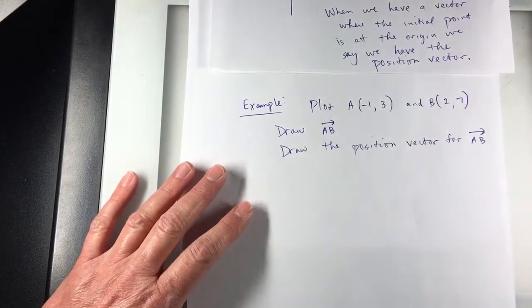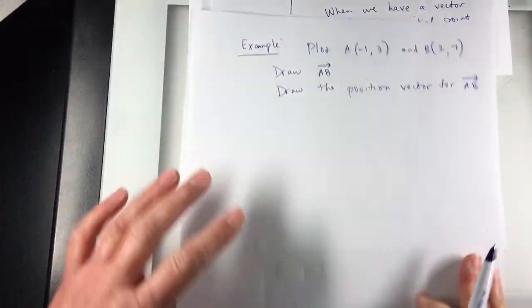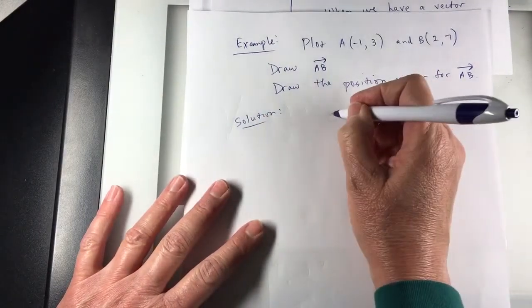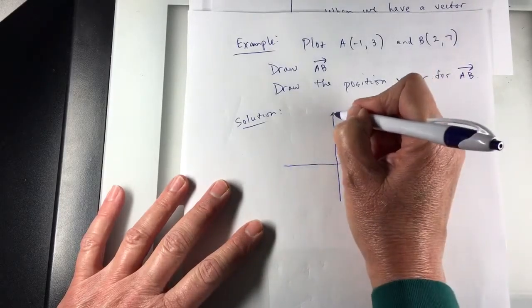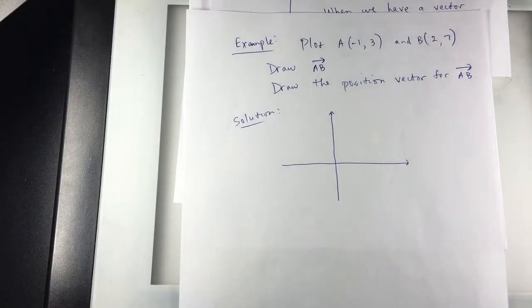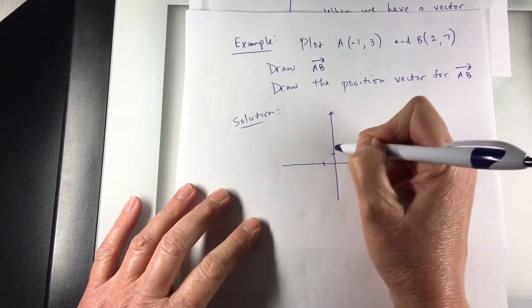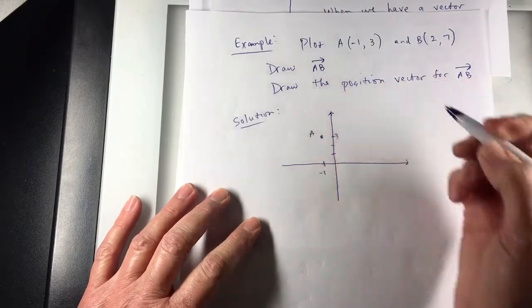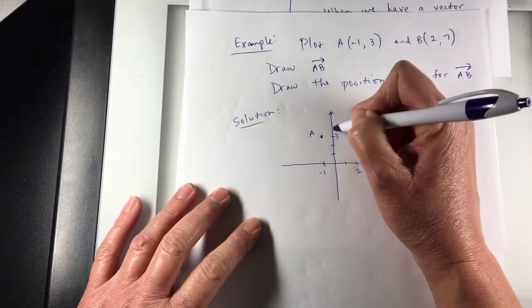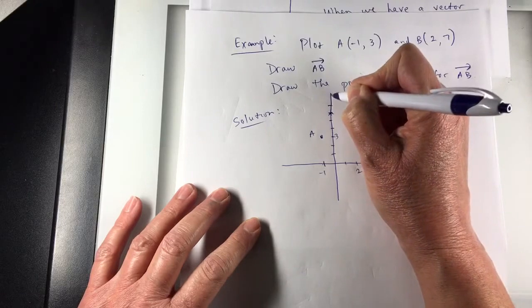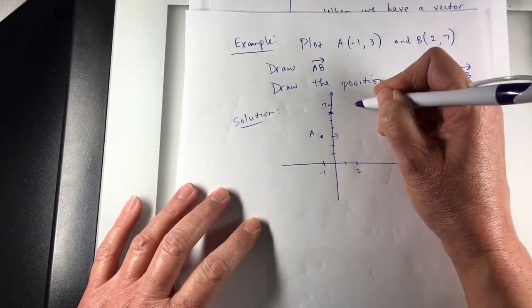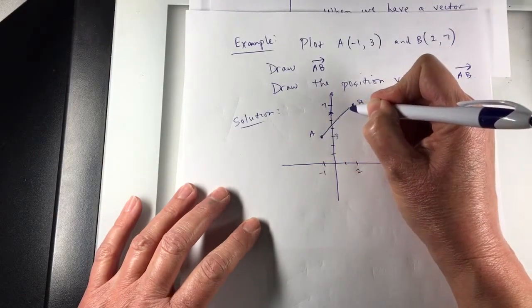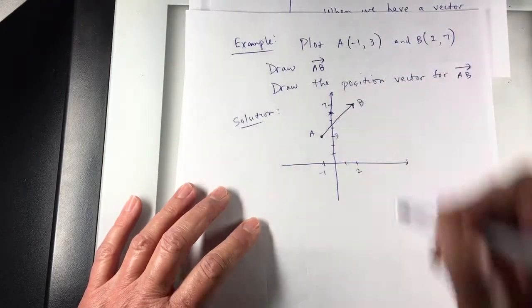So this one doesn't seem like a hard problem, especially since it's in two dimensions. So for A, I'll go negative one, one, two, three. There's A. B is two for X, four, five, six, seven. Let me extend that line a little bit. Two, seven. So vector AB is right there.